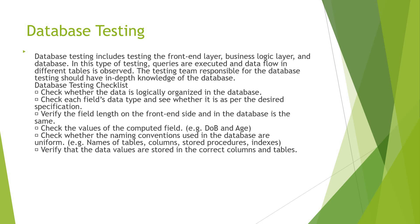Database testing checklist: check whether data is logically organized in the database. Check each field's data type to see if it matches the desired specifications. Verify that the field length on the front-end matches what's in the database. Check the values of computed fields, for example date of birth and age. Check whether naming conventions used in the database are uniform across table names, columns, stored procedures, and indexes. Verify that data values are stored in the correct columns and tables.